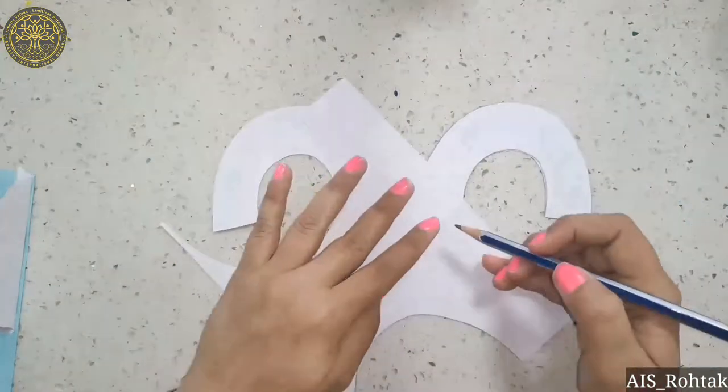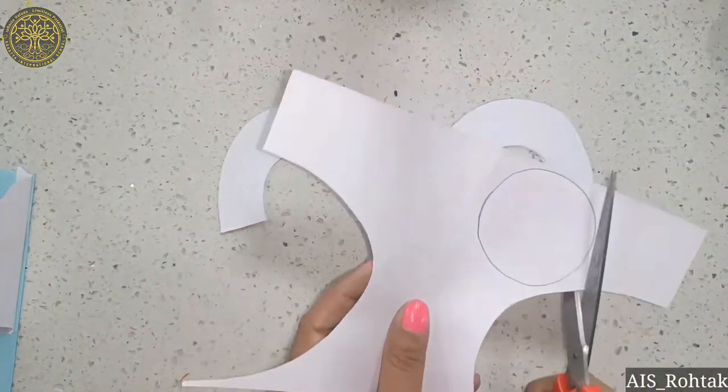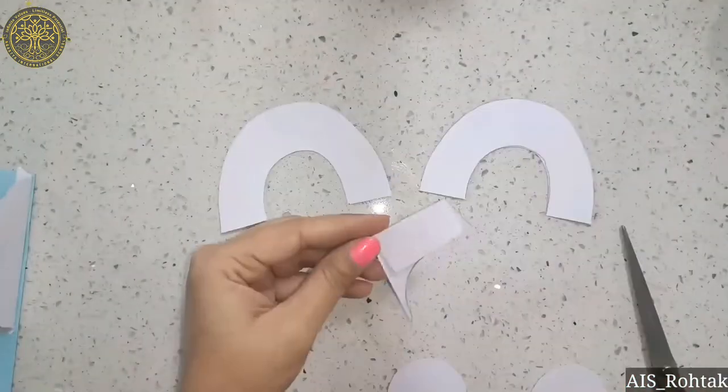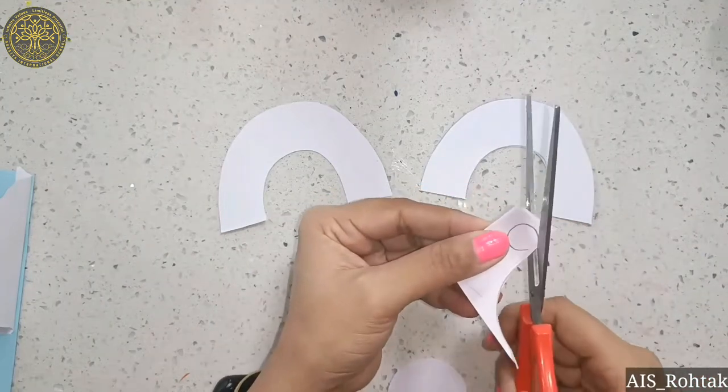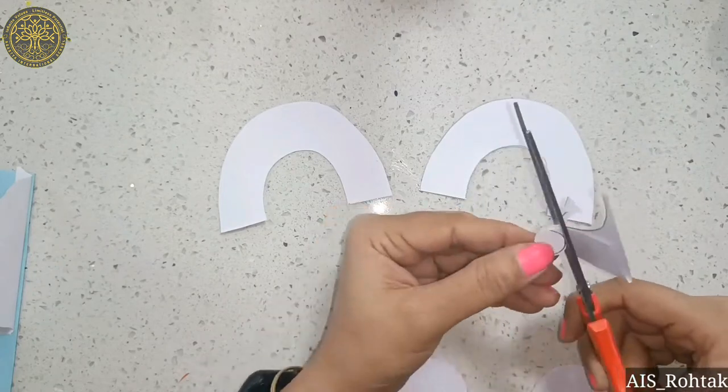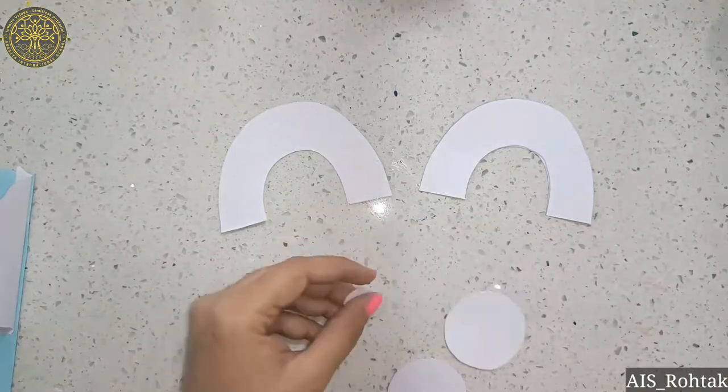Then draw a circle. Now cut this circle. We need two circles. Then we draw a curve line for the ear of the polar bear. We will paste it here.